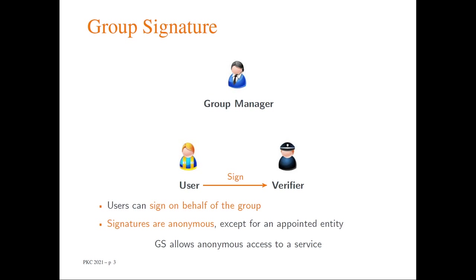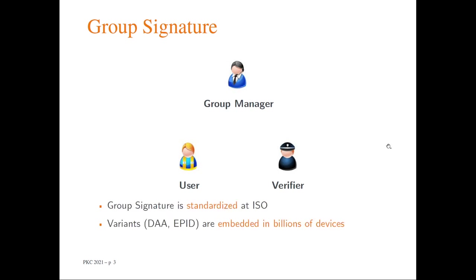In particular, the signatures are anonymous except for an appointed entity, which can be the group manager or some other entity depending on the model. This allows anonymous access to a service, meaning that the verifier will be able to check that the user is a valid user, but won't be able to identify them. Group signatures are now standardized at ISO, and many variants such as Direct Anonymous Attestation or EPID are now embedded in billions of devices.